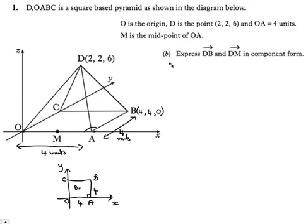So part B of the question: express the journey from D to B and the journey from D to M in component form. So let's start with travel from D to B and look at that journey. Here it is, from D down to B. The journey from D to B component form: remember we put them in a column, x component. Travelling from D to B, what have we done in a direction parallel to the x-axis? We've gone from 2 to 4, so really that's a journey of 2 units parallel to the x-axis.